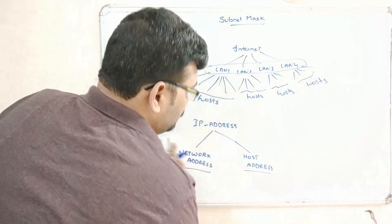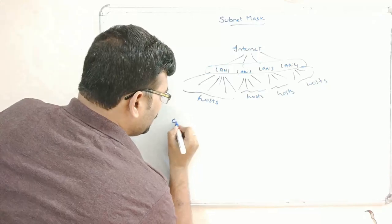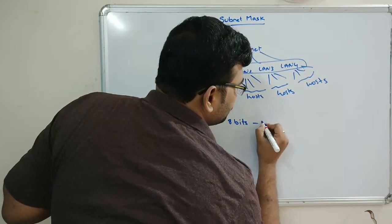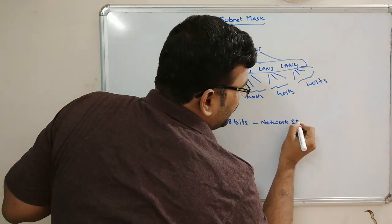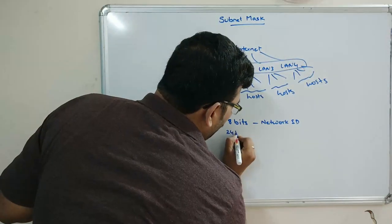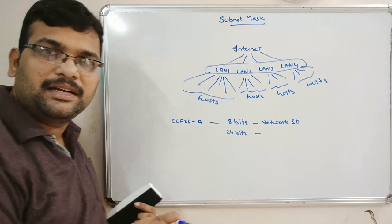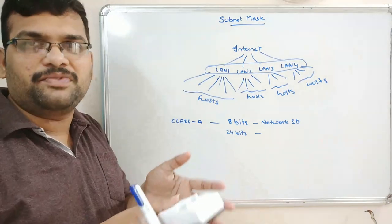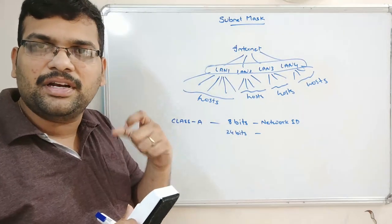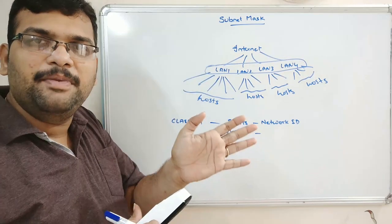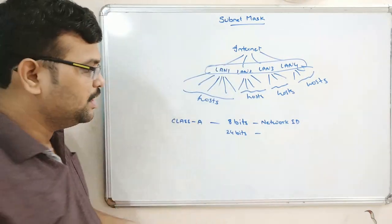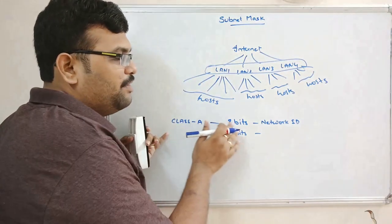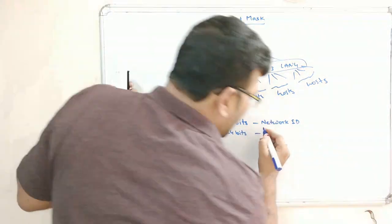Based upon the class of IP address, there are different network addresses and host addresses. For class A, the IP address will have the first 8 bits as the network ID and the remaining 24 bits as the host ID. The total length of any IP address is 32 bits, divided into four sections of 8 bits each — these are called octets.